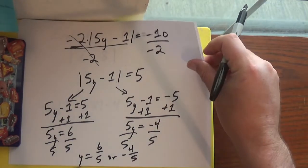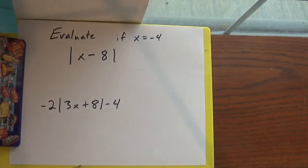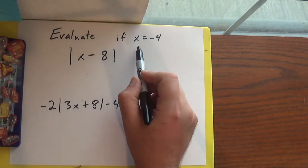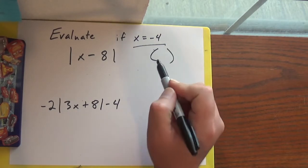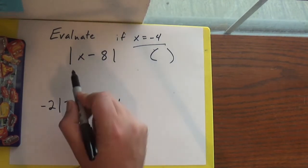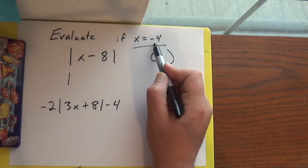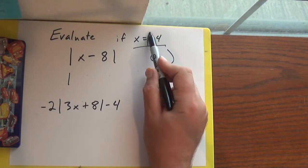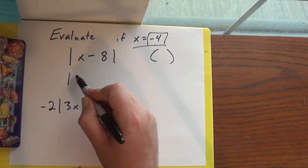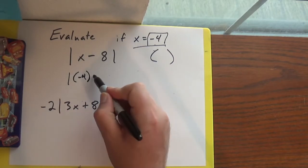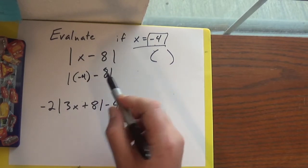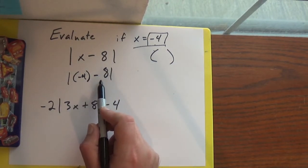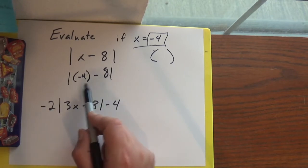Sometimes in the absolute value section they're going to ask you to evaluate. So it says evaluate if x equals negative 4. When you're evaluating, just use parentheses and stick it in there — put this negative 4 in instead of x. The parentheses don't matter here but they would down there. So negative 4 and negative 8: you just add them up, you get negative 12.